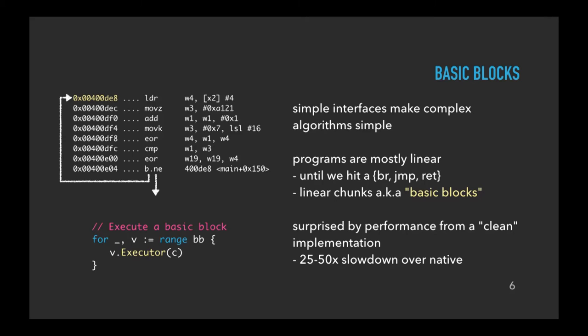A nice property of having a simple interface is that it then makes complex algorithms simple. If we look at the underlying knowledge of a program, you find that the structure of code is mostly linear, and we can use that to actually gather a sequence of contiguous instructions — also known as a basic block — into a slice. And then we can actually execute a whole basic block of instructions simply by ranging over that slice and calling the uniform, clean interface that the closure provides.